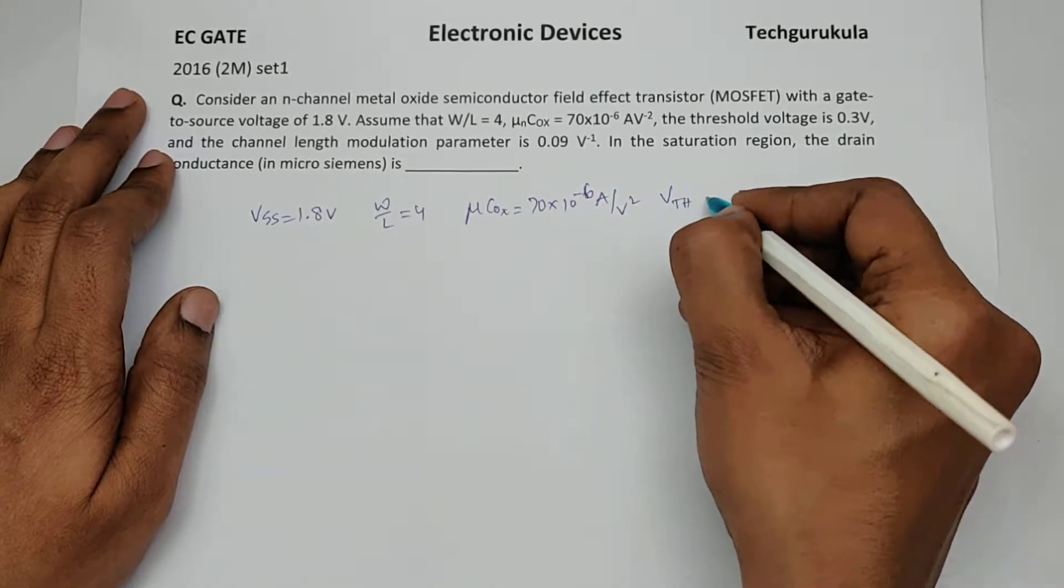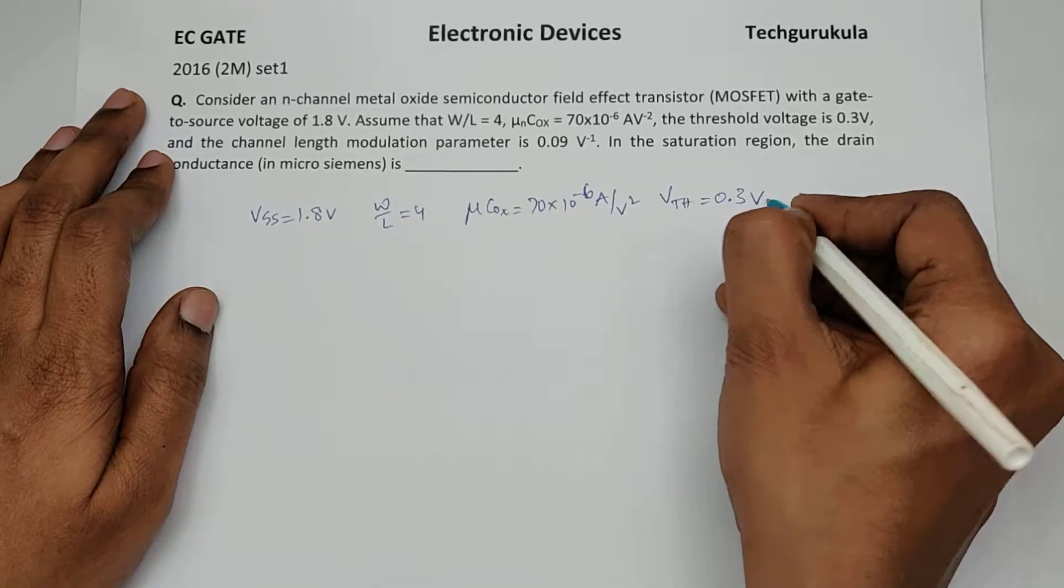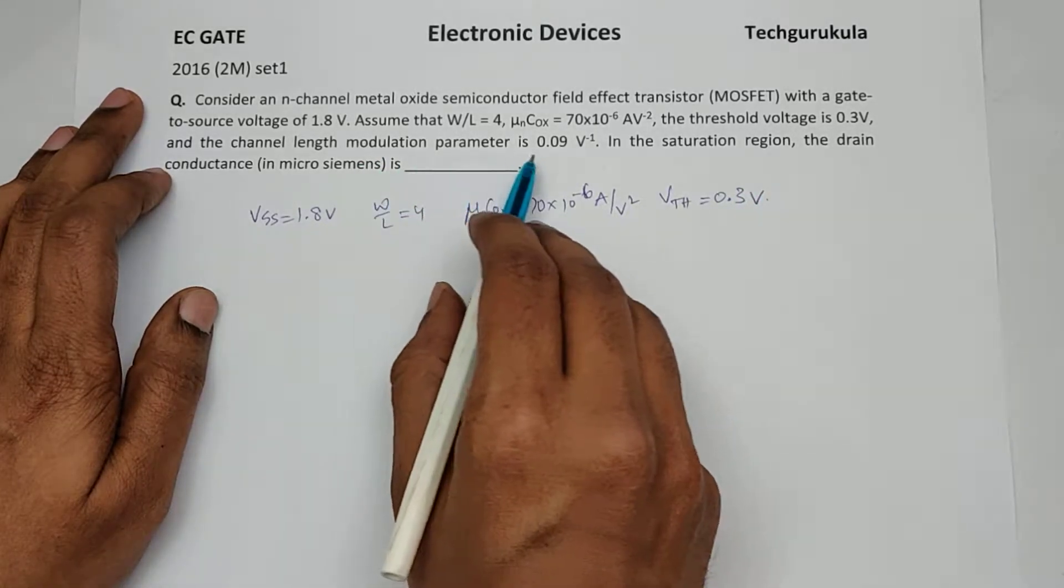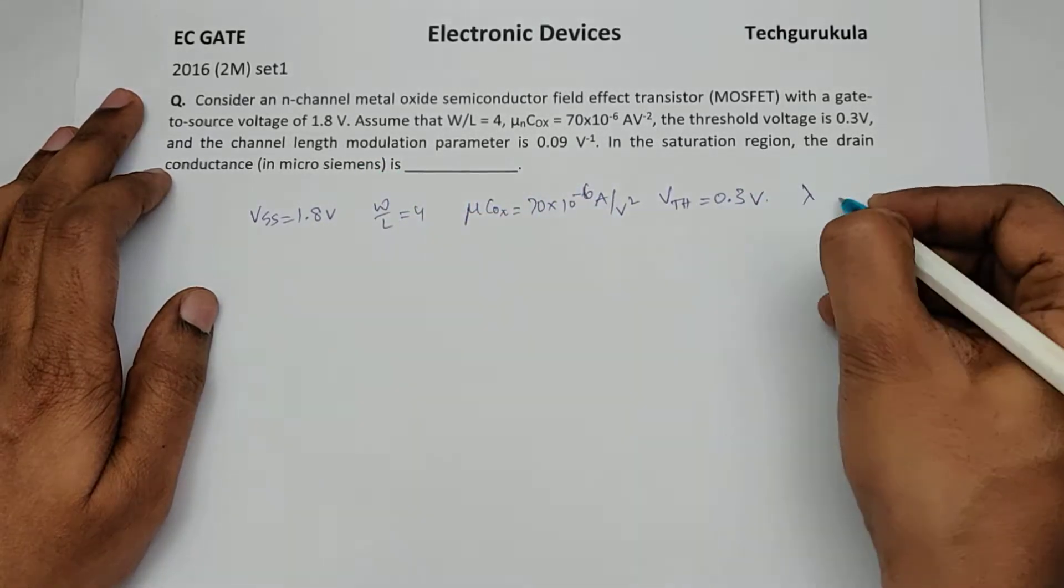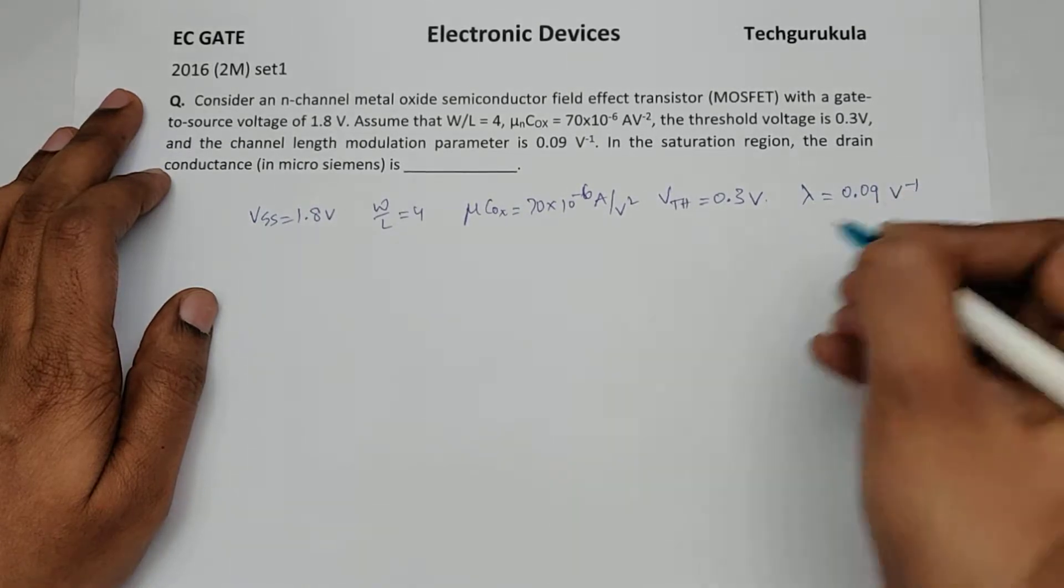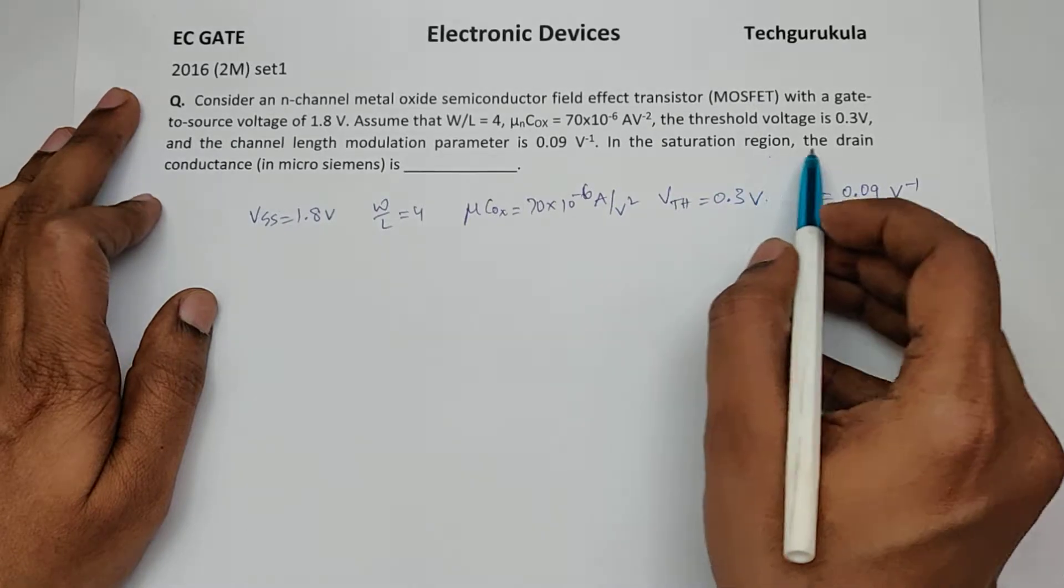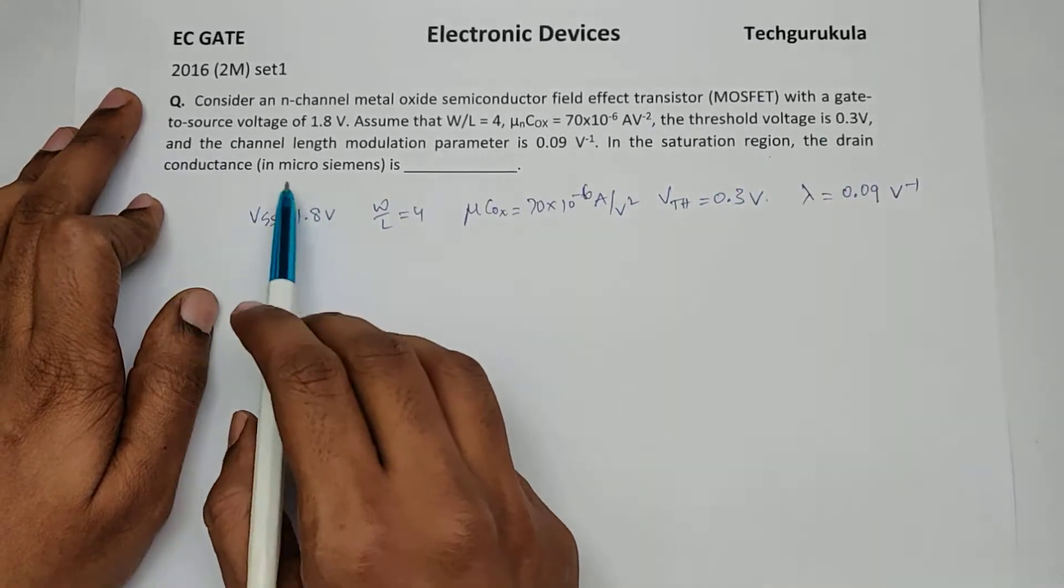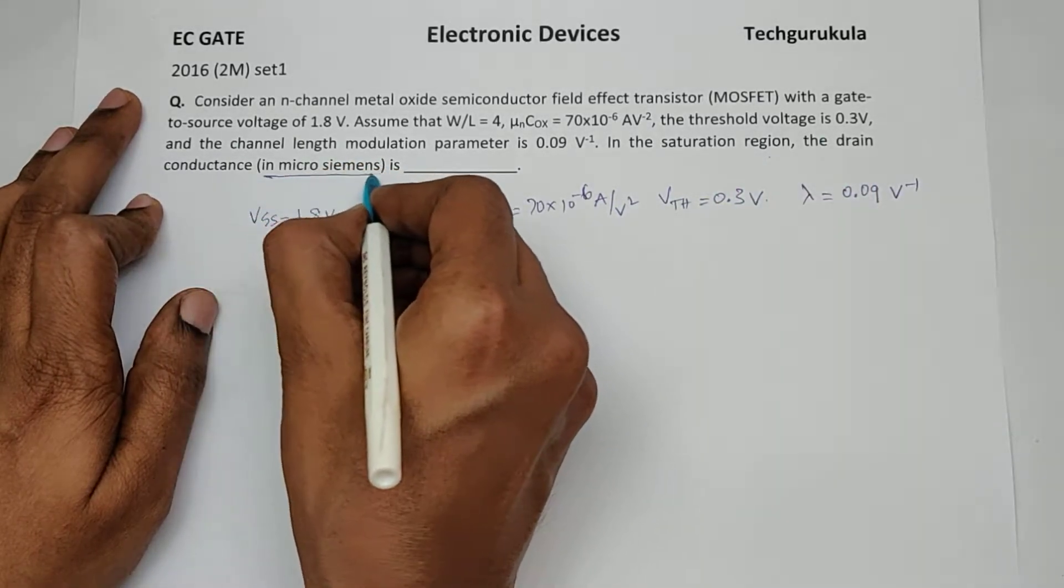Threshold voltage is also given which is 0.3 volts, and the channel length modulation parameter which is usually represented with lambda, this is 0.09 volt inverse. Now in the saturation region, the drain conductance in micro Siemens is...